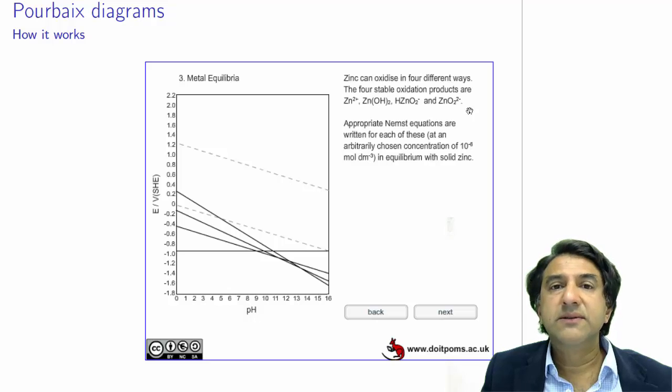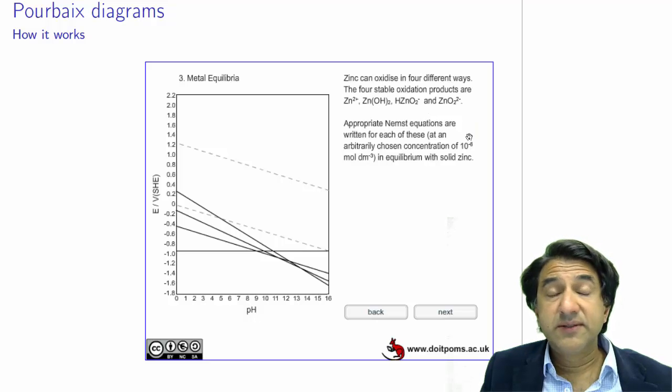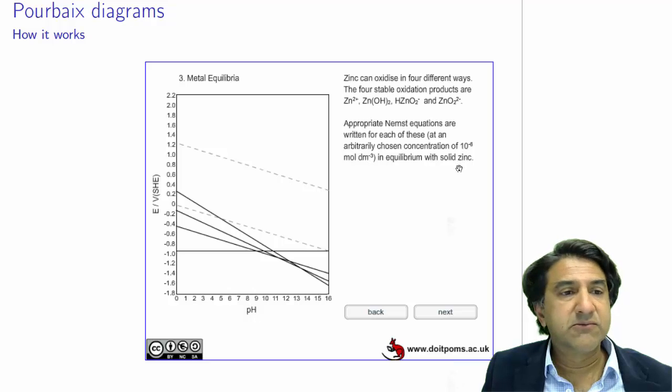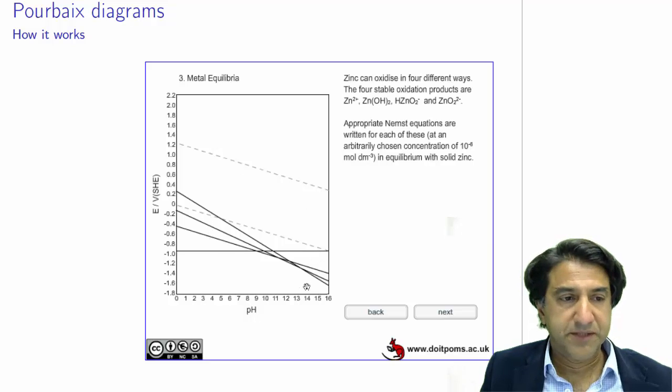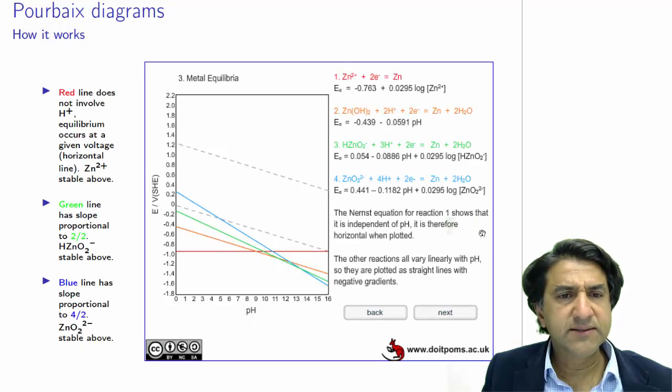Now zinc can exist in water in several different states: Zn2+ aqueous, ZnOH2 aqueous, and a couple of negative and double negative ions. We want to see the regions in which these species are stable. So the first thing to do is to map out the stability regions of water, these dashed lines, and then we plot out the equilibrium lines for each of these species. And this is how we do it.